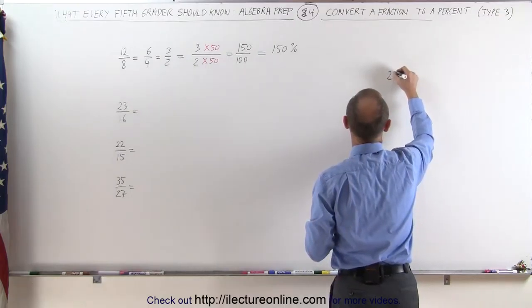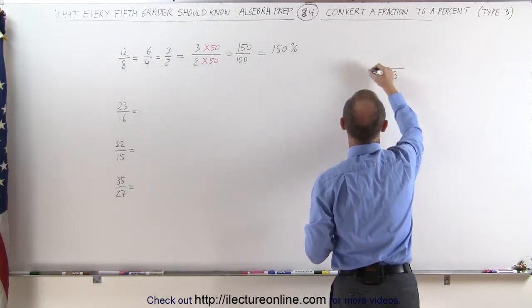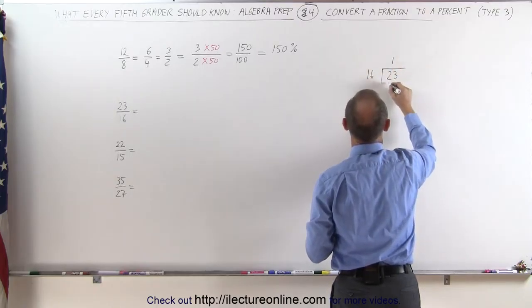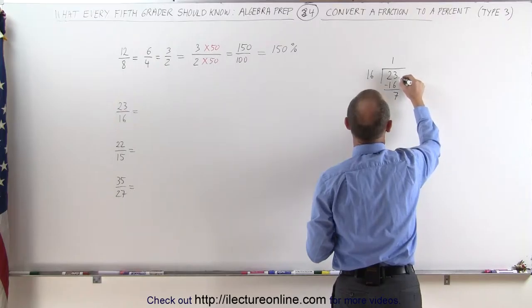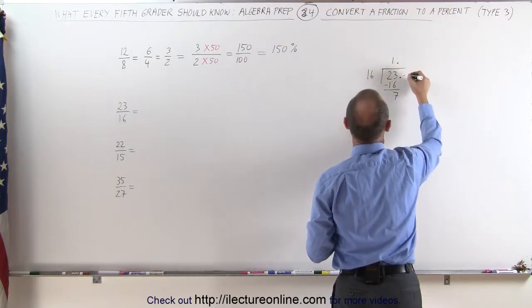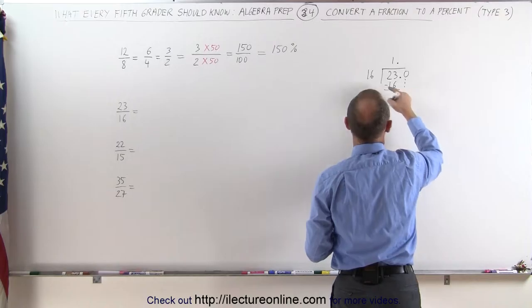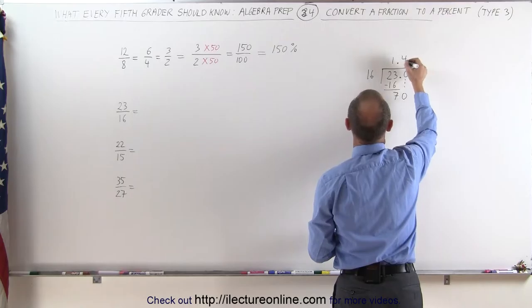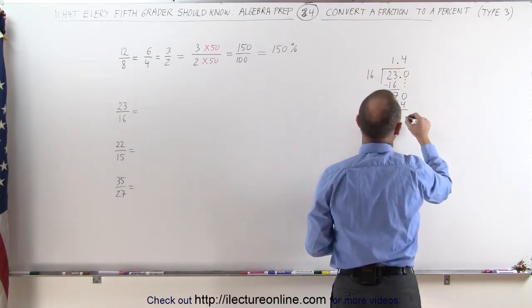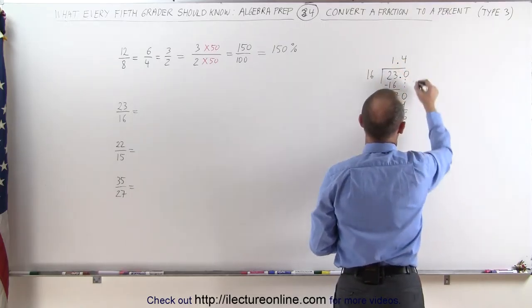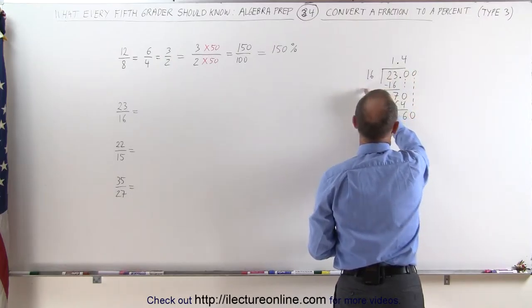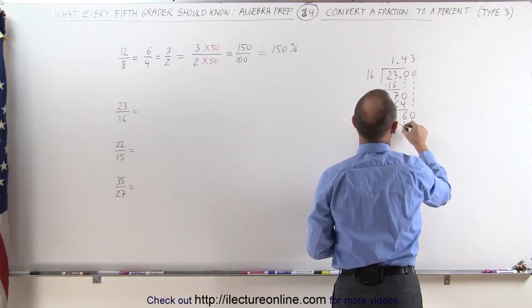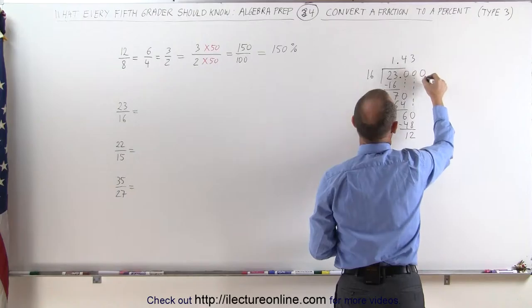We take the numerator, 23, and divide it by the denominator, 16. 16 goes into 23 one time, 1 times 16 is 16, the remainder is 7. I put a decimal place there, put a decimal point there, add a 0. Come down here, 16 goes into 70 not quite 5, how about 4 times? 4 times that is 64, the remainder is 6. Add another 0, bring down the 0, 16 goes into 60, 3 times, because 3 times 16 is 48, remainder is 12.